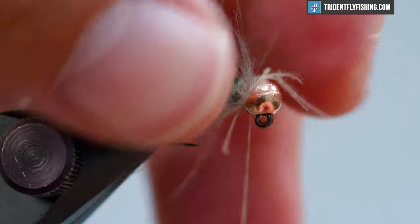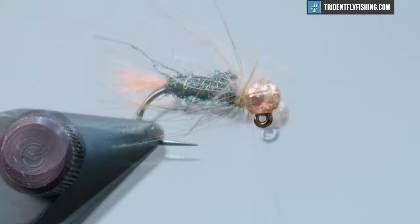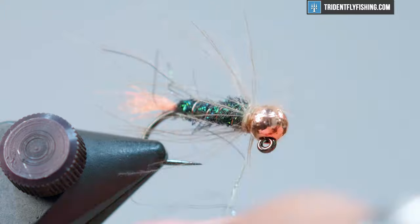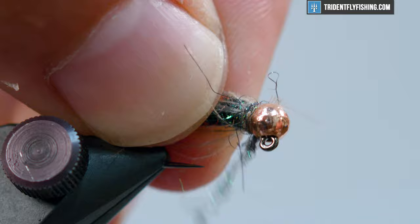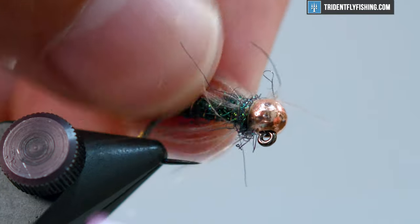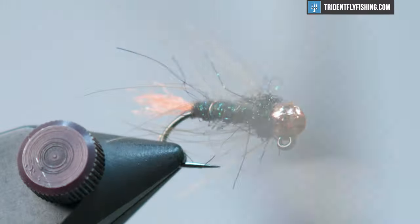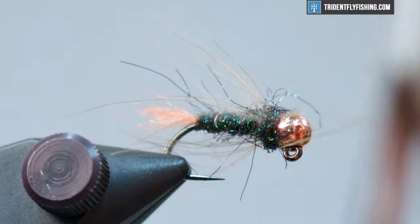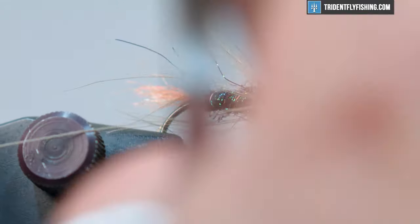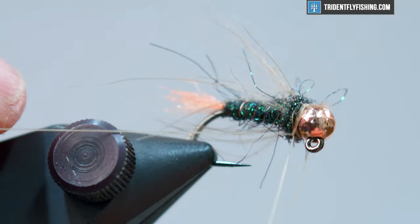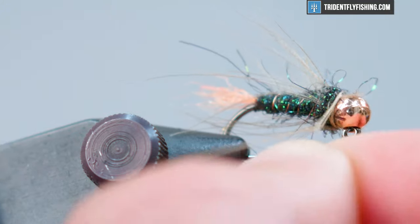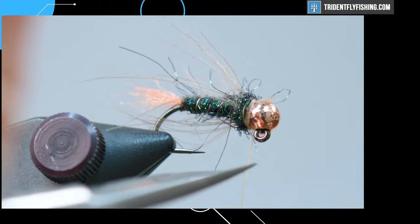We have a little bit of thread there. We're going to hide that thread just with a little bit more dubbing right in front of those CDC fibers. Just tie everything together. Make it a little more neat. Now we can throw a half hitch and then a whip finish. And that is an Olsen's blowtorch. I want to thank you guys for watching and I will see you next time.